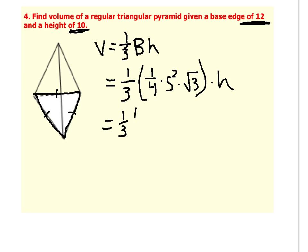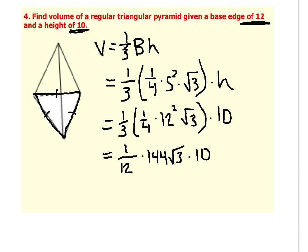We know that the base edge of the triangle is 12 and the height is 10. So if I plug those values in, 1 third times 1 fourth times 12 to the second power, root 3 times 10. We know that 12 to the second power is 144. So if we take the fractions, 1 third times 1 fourth is 1 twelfth, times 144 root 3 times 10. And then in your calculator, 144 times 10 is 1,440. Divide that by 12, and it turns out you just get 120. Don't forget to attach the root 3 and your cubic units.